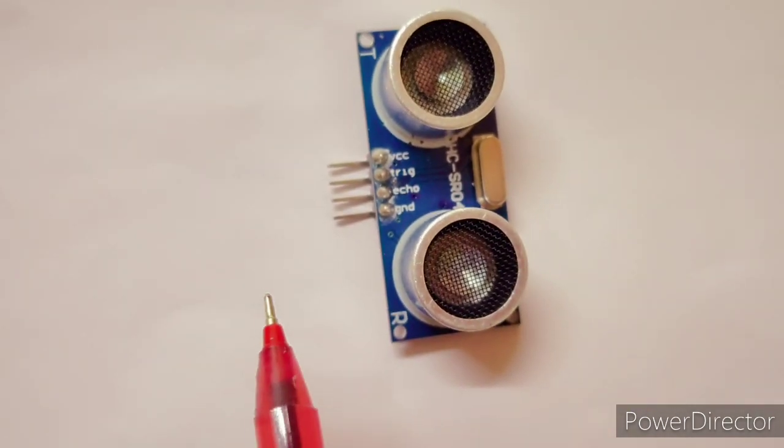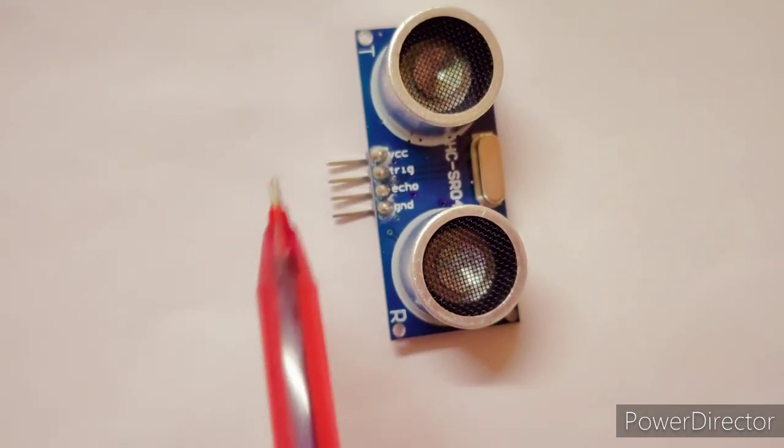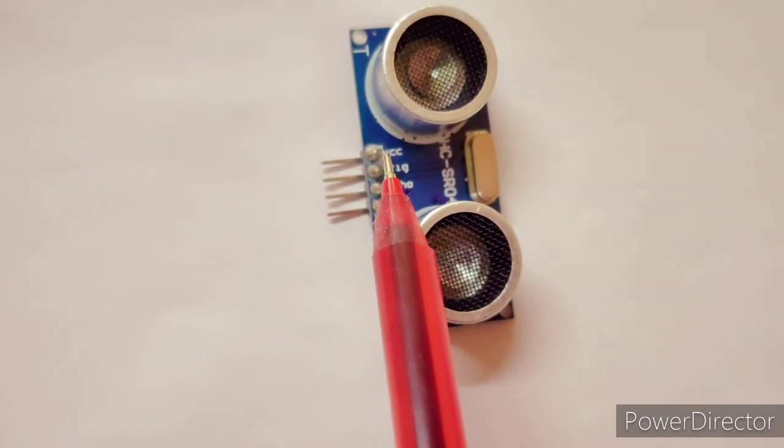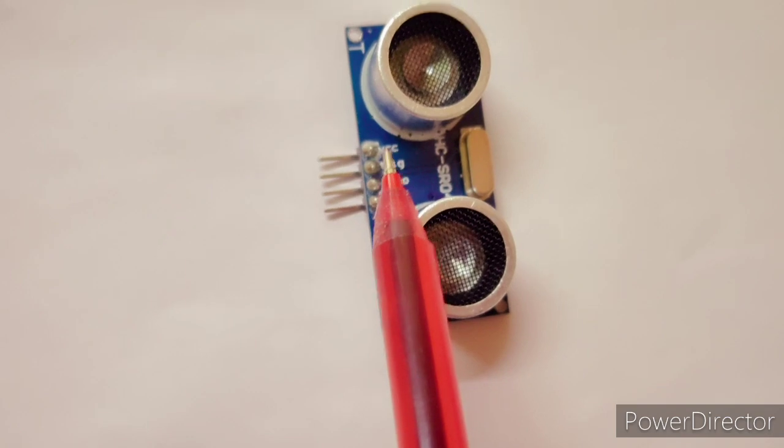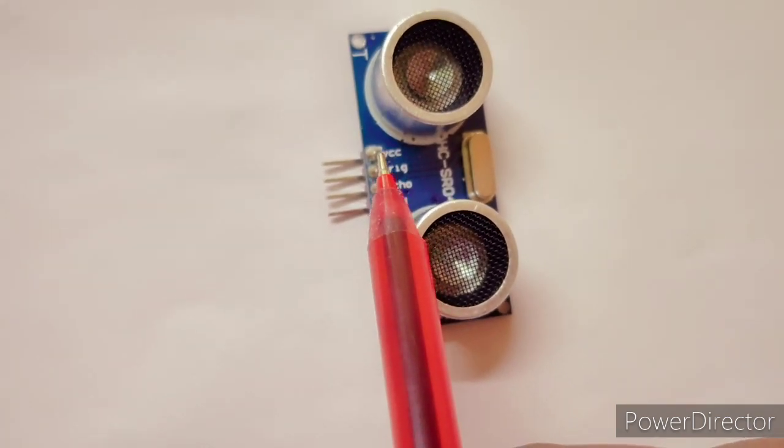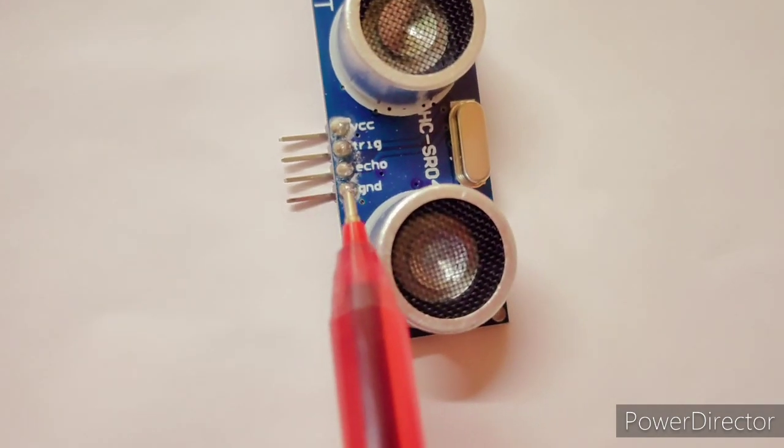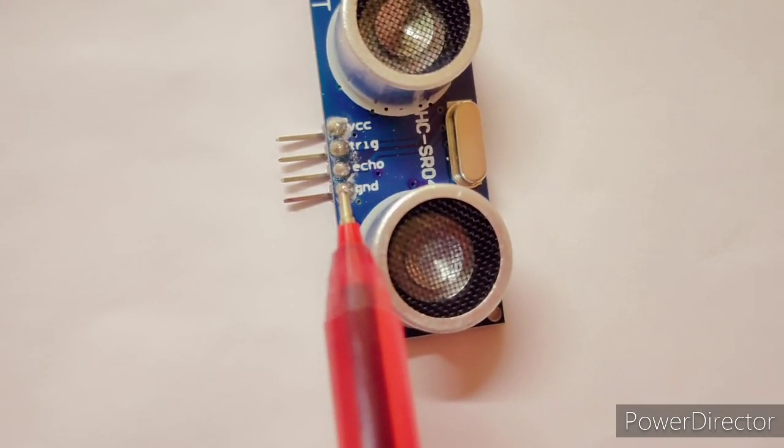Four pins are present here. As you can see, this is the VCC pin. This pin is used to power on the ultrasonic sensor. We have to connect it with Arduino Uno board's 5-volt pin. And this is the fourth pin, the ground pin. We have to connect it with Arduino Uno board's ground pin.